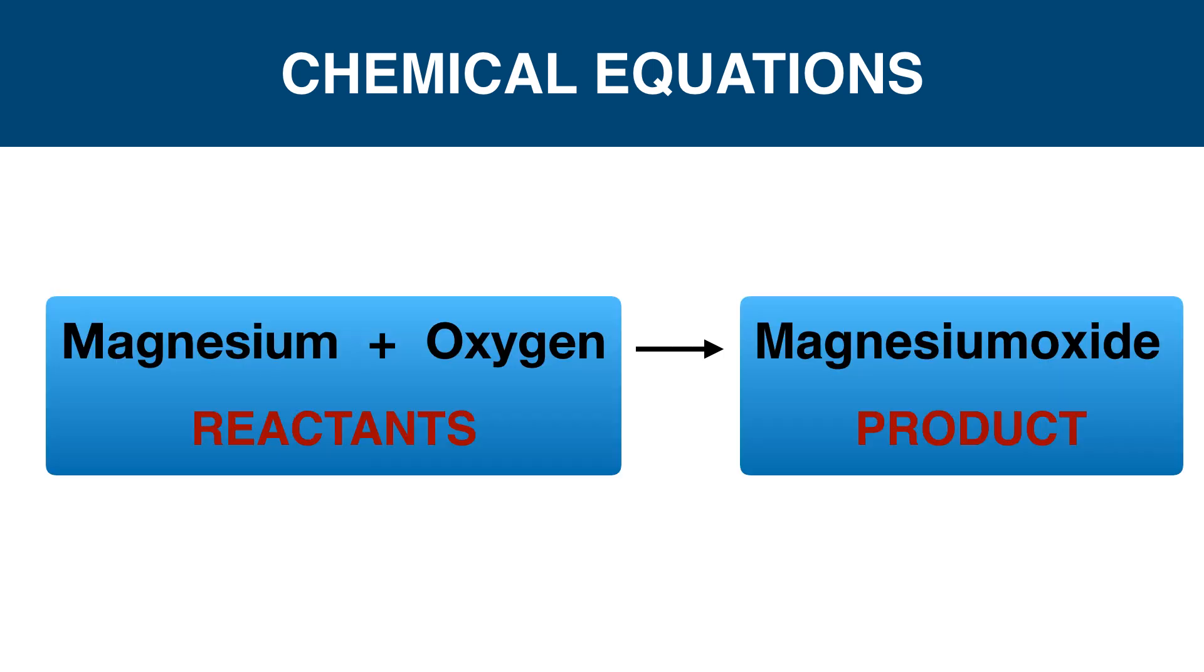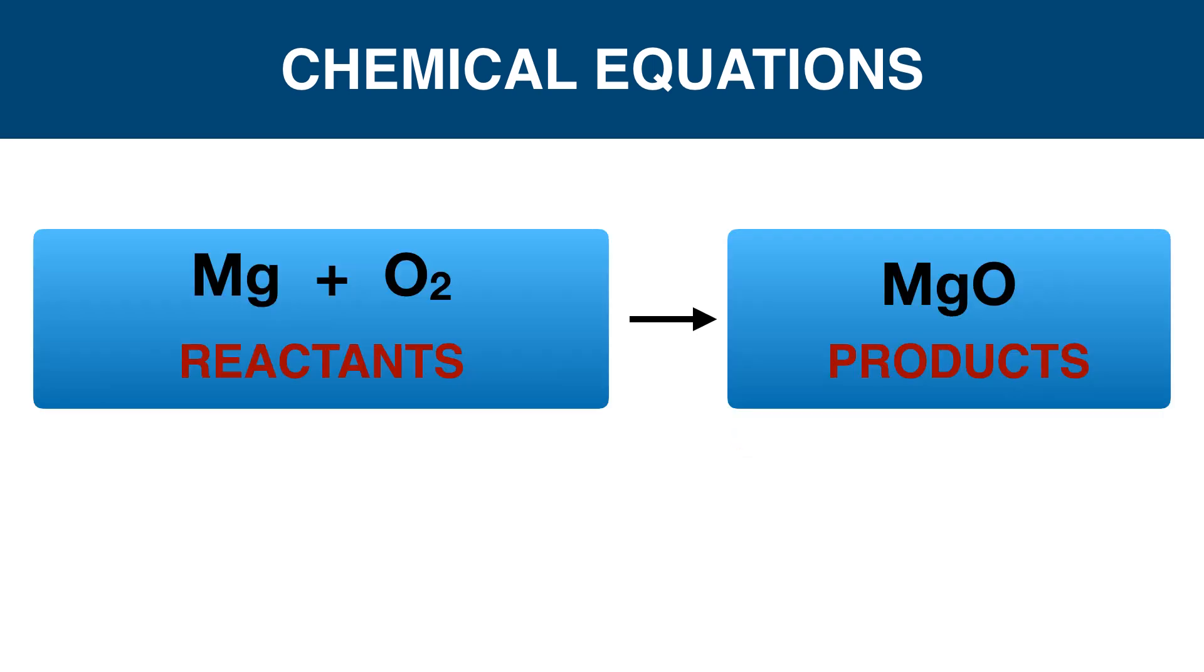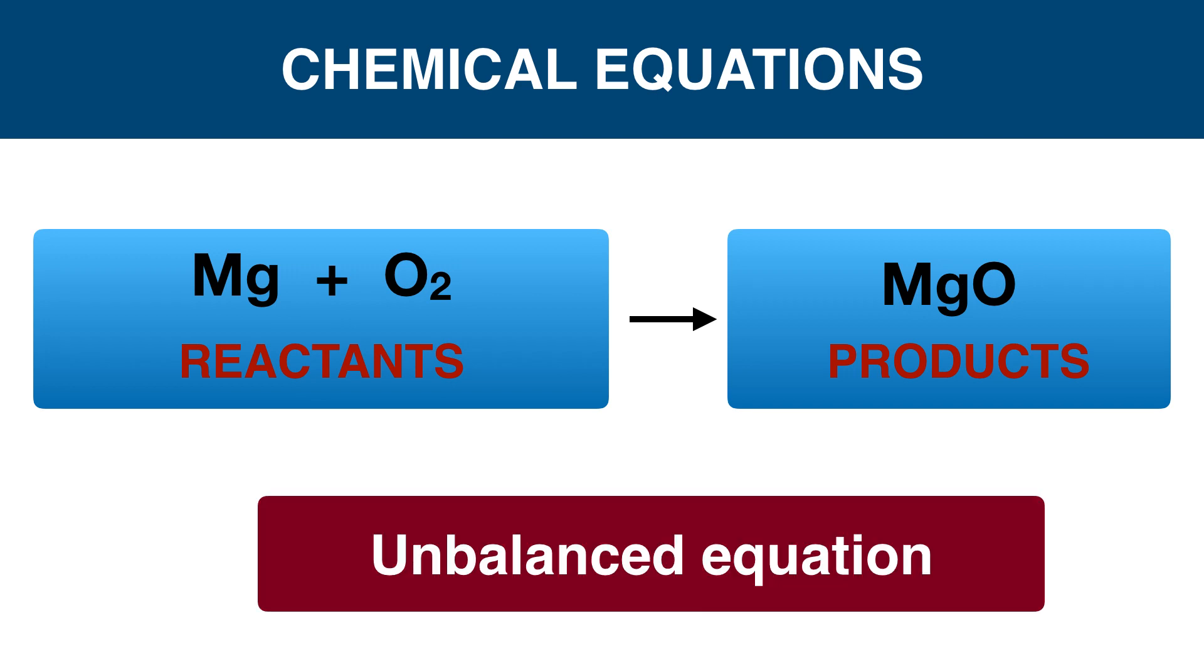This equation can be represented with symbols: Mg + O2 → MgO. The number of magnesium atoms in the reactant side and product side is the same, but the oxygen atom number is not equal. So we can say it is an unbalanced equation.